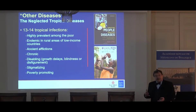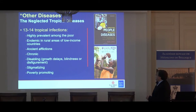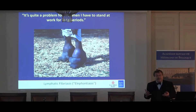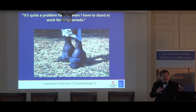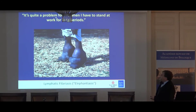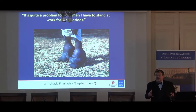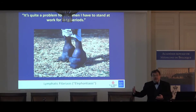We started writing papers about this concept and even wrote a book called 'Forgotten People, Forgotten Diseases.' Here's an example of a neglected tropical disease: lymphatic filariasis, affecting 100 million people. This individual is too sick to help support his family — a disease occurring in the setting of poverty and causing poverty. He says, 'It's quite a problem for me when I have to stand to work for long periods of time.'